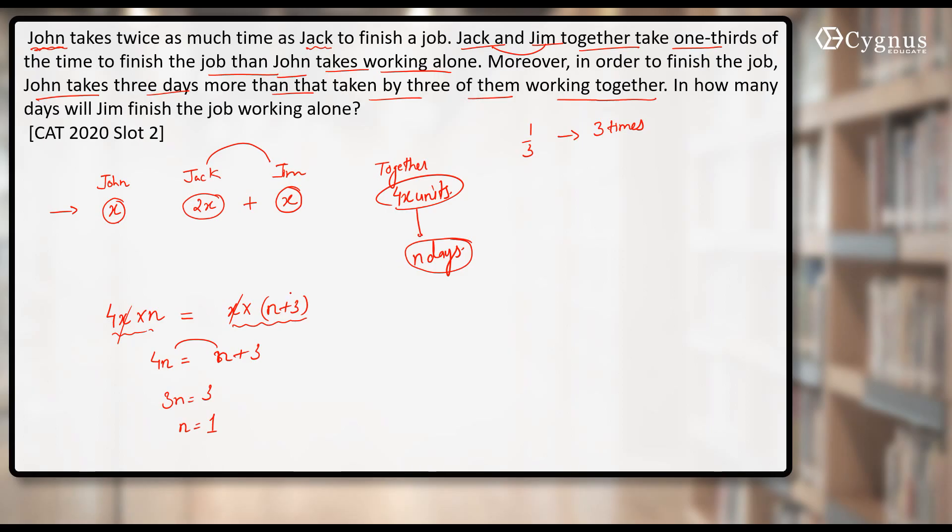That means all three of them will take only one day to finish the whole work. So what's the total work? It was 4x into n. n is equal to 1. That means now I can say that the total work in terms of x becomes 4x into 1. That is equal to 4x units.